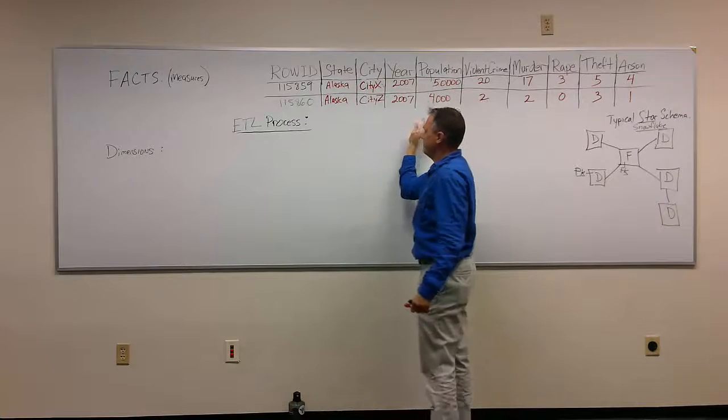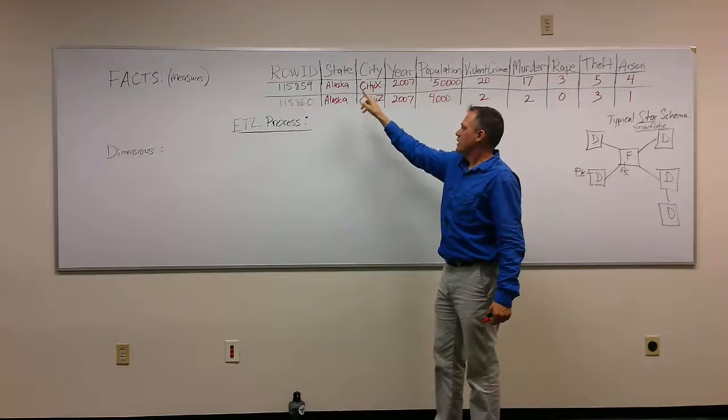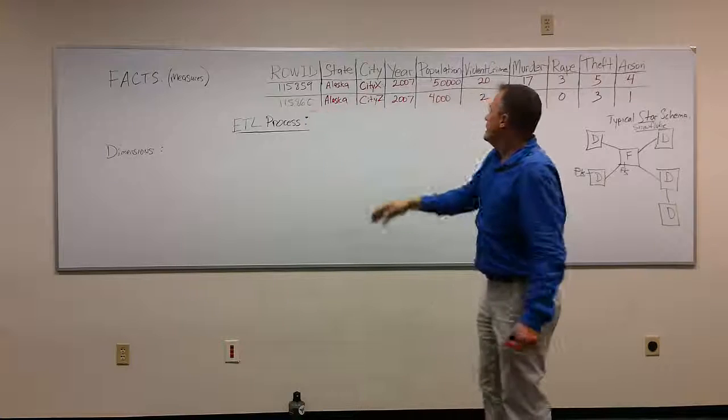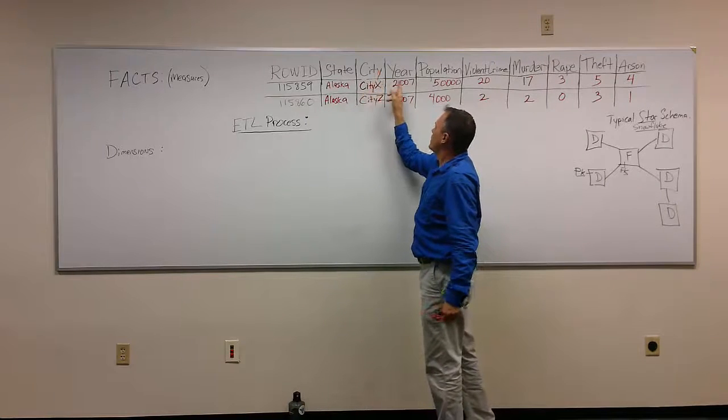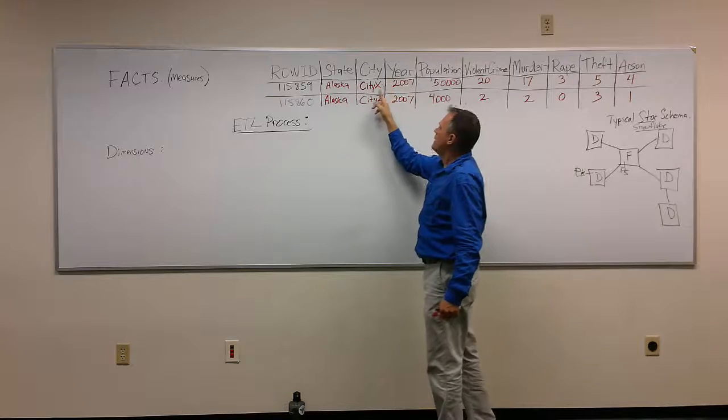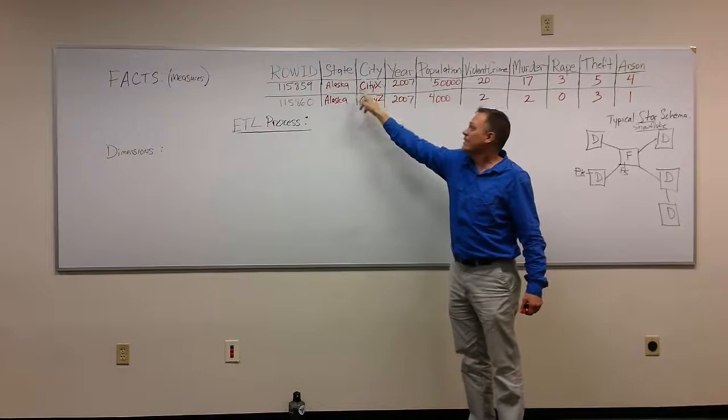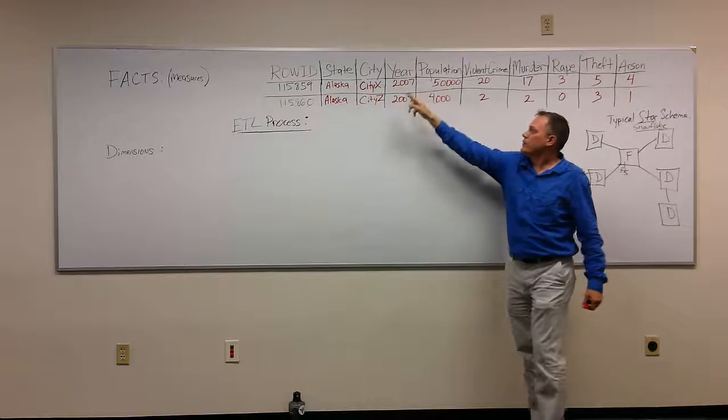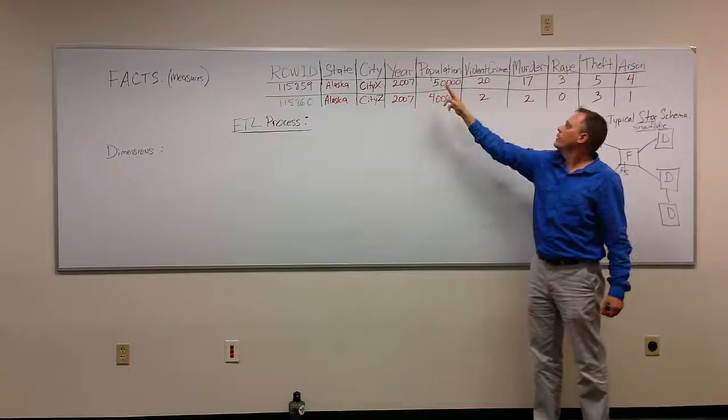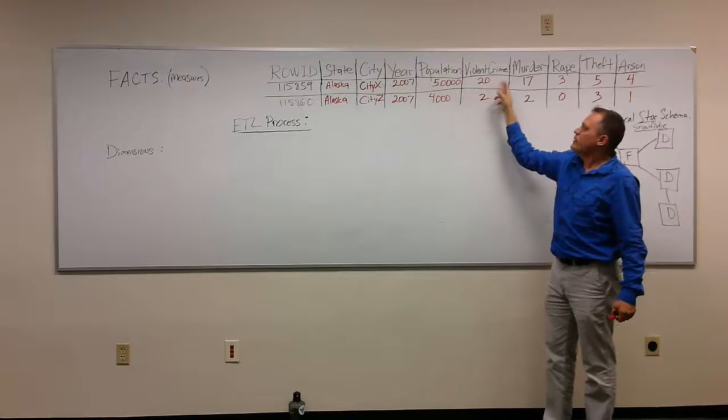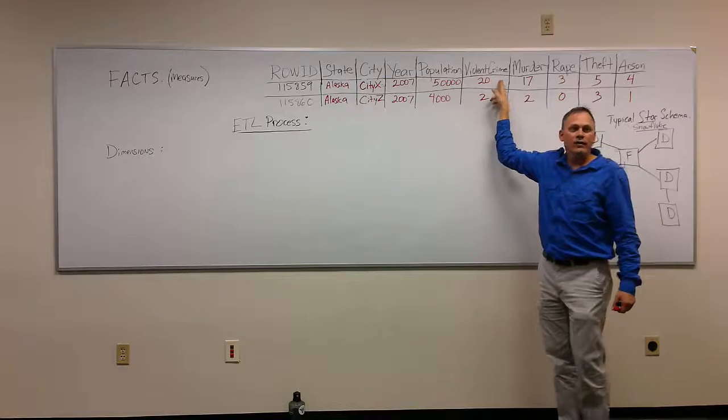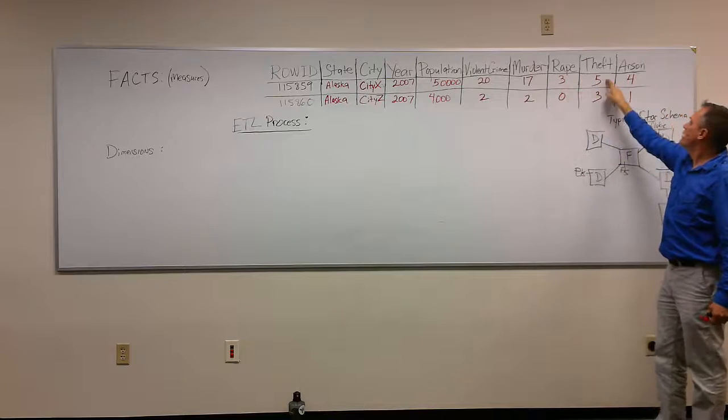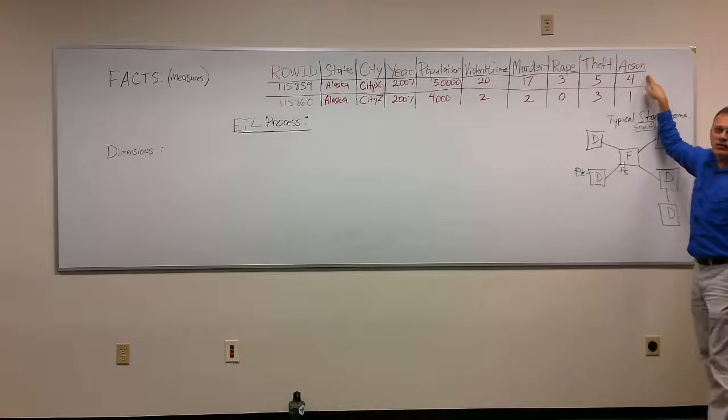Now, from left to right, crime data was, in this case, collected from the state of Alaska. And in the state of Alaska, there was an encounter of crime in this city. In the state of Alaska, we recorded City X in Alaska. In the year 2007, there was a population of this city of 50,000 people. In that population, there were 20 violent crimes that were recorded. There were 17 murders, 3 rapes, 5 thefts, and 4 arson.